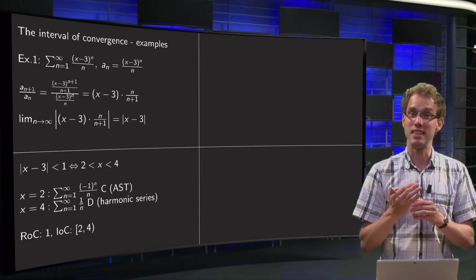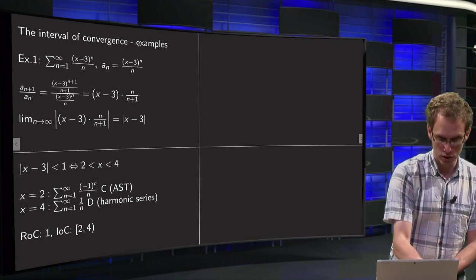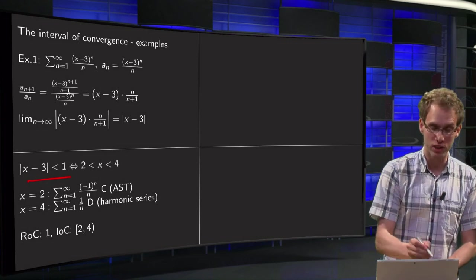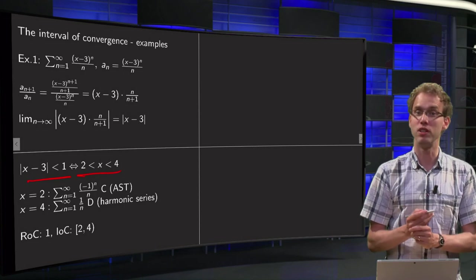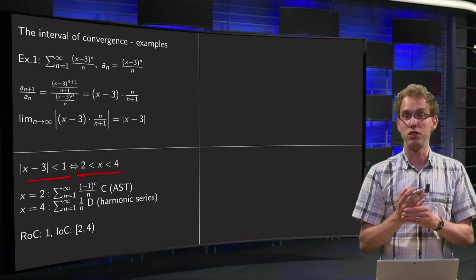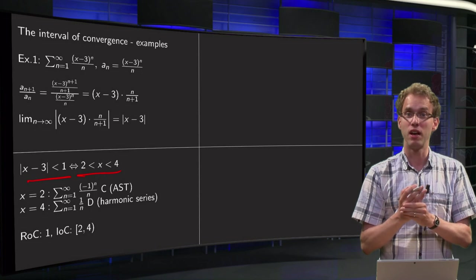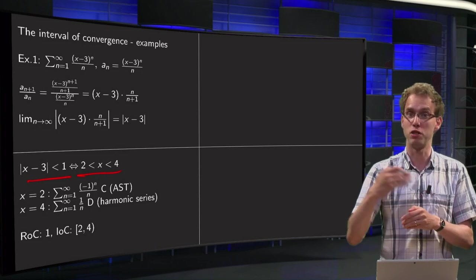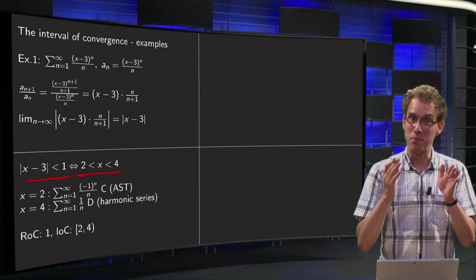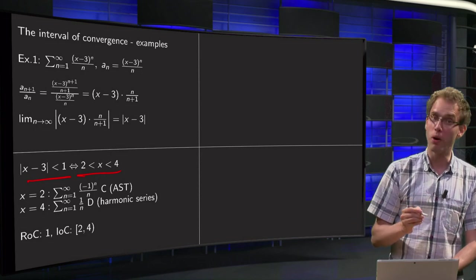Now the ratio test says that this converges if it is smaller than 1, so we have convergence for |x-3| < 1, which means that we converge if x is between 2 and 4. And we also know that the series diverges if this limit is bigger than 1, so we have divergence if |x-3| > 1, so if x > 4 or x < 2. Then we still don't know what's happening if this limit equals 1, so if |x-3| = 1. Well, we have two cases.